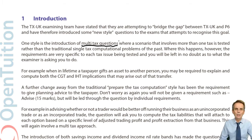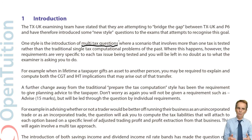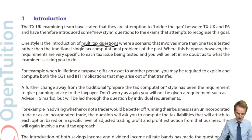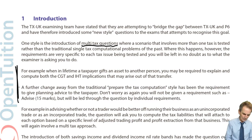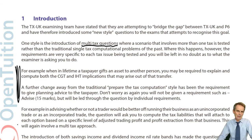I did introduce the idea that when you move ownership of an asset in full or in part from one spouse to another, you do have to consider other taxes — those two taxes being the capital taxes: capital gains tax and inheritance tax. But when we move assets between spouses, in fact no difficulties arise as regards the capital taxes.